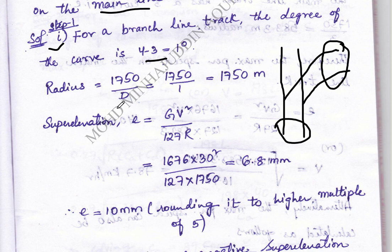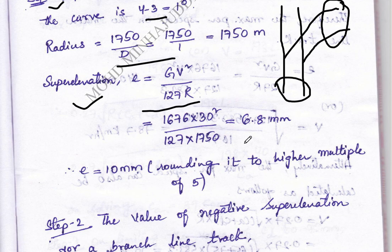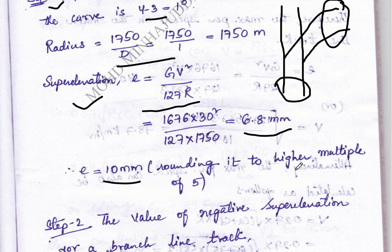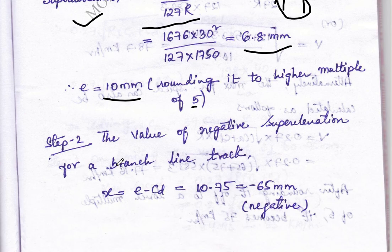Next, the radius of curvature is calculated using the known formula. Then super elevation is calculated using e = GV²/127R. We get 6.8 mm, which we round up to 10 mm — the higher multiple of 5 — as explained in the previous problem.